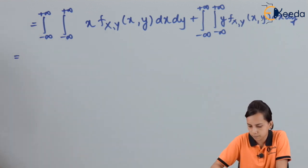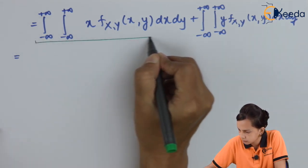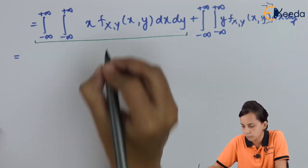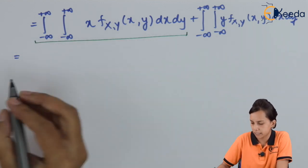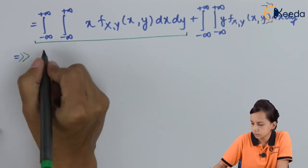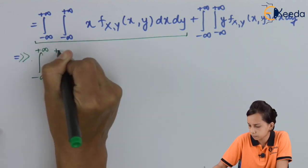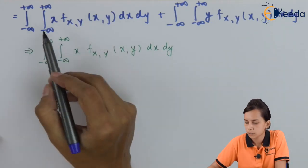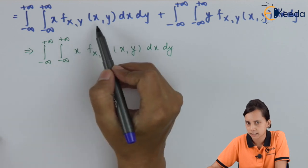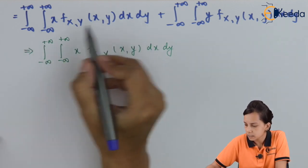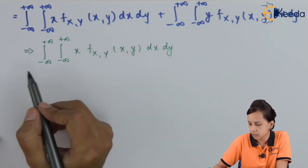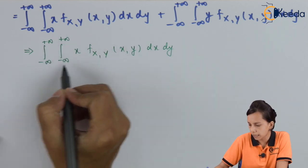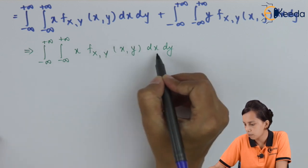This whole concept is based on the joint probability density function discussed in our previous video. After multiplying by the joint PDF f_{XY}(x, y) inside the bracket, we get our required equation. We analyze this equation by denoting its two parts separately, so we can analyze each term individually. The full expression is a double integral from minus infinity to plus infinity in both X and Y of (x + y) times f_{XY}(x, y) dx dy.